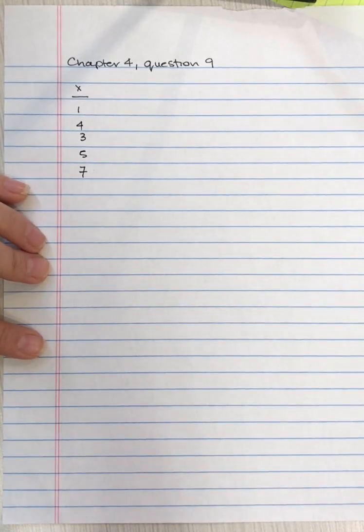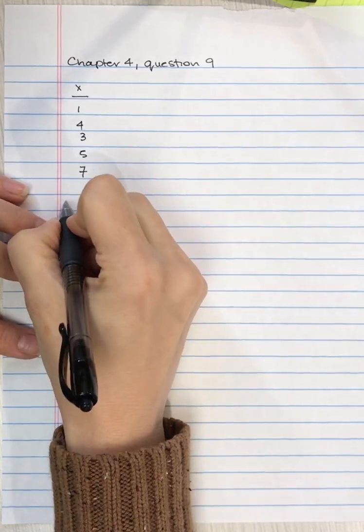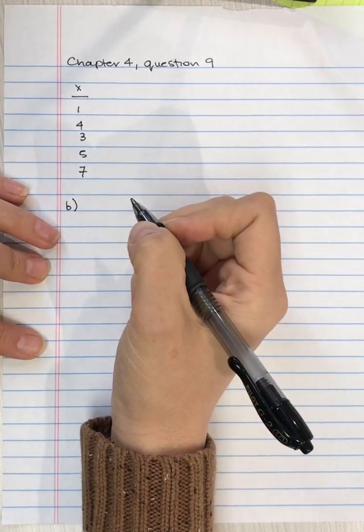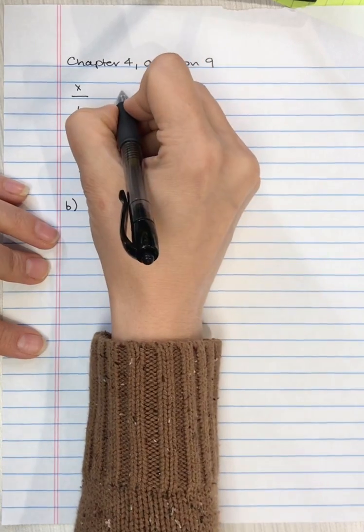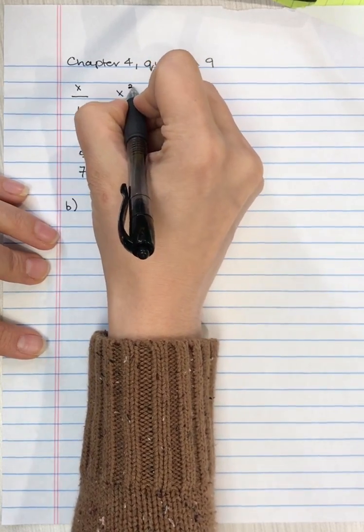Question 9b states: for the same set of scores, if the scores are a sample, what are the variance and standard deviation? To calculate this, for simplicity, we're going to use the computational formula again.